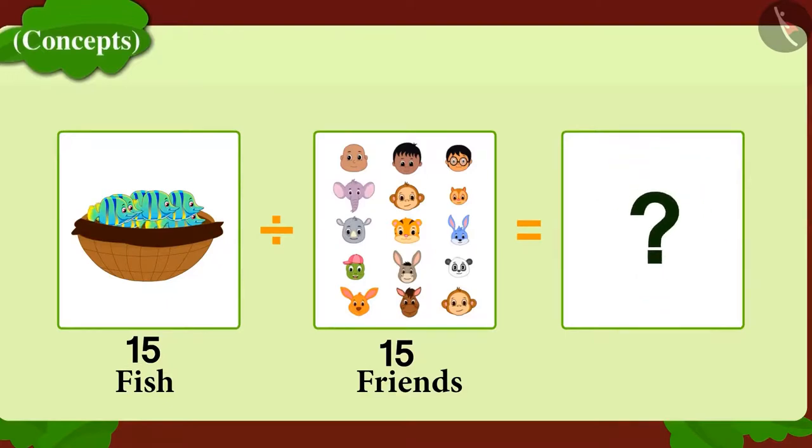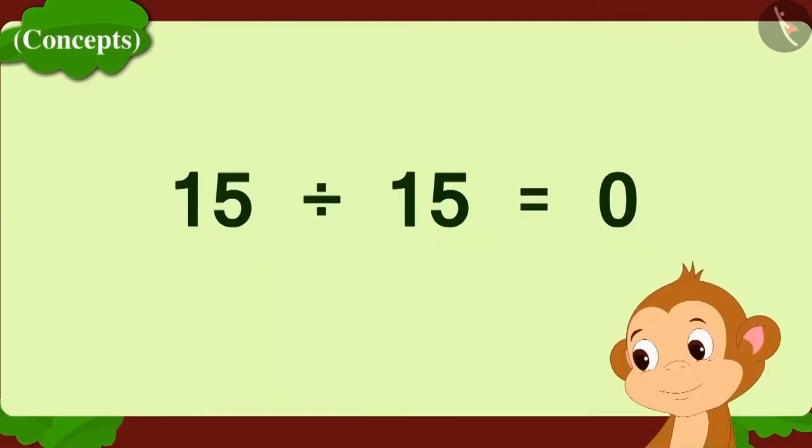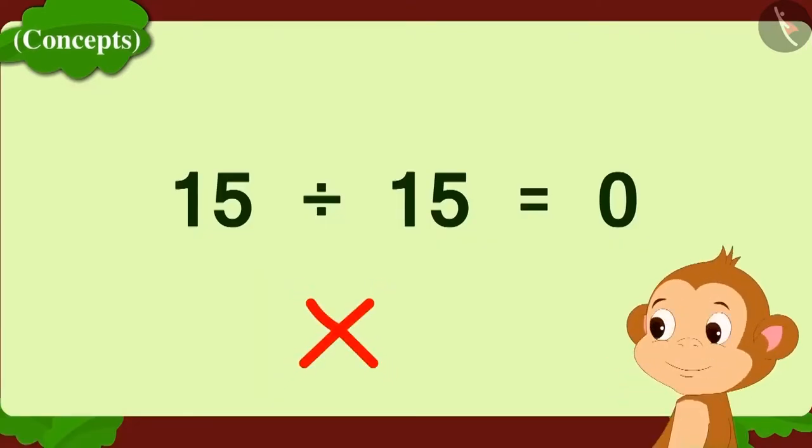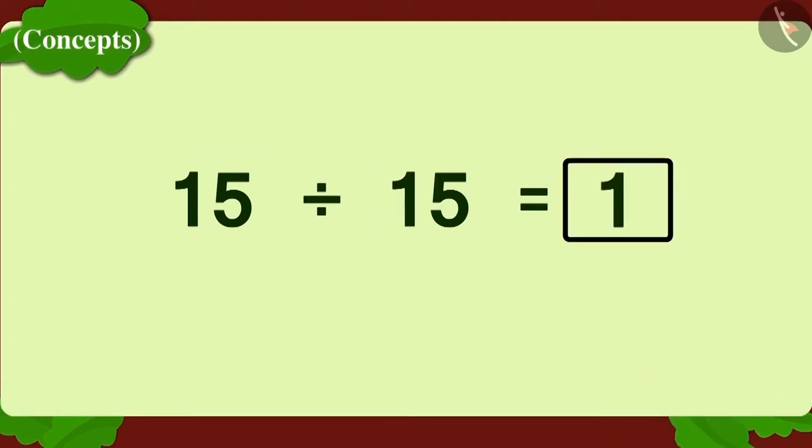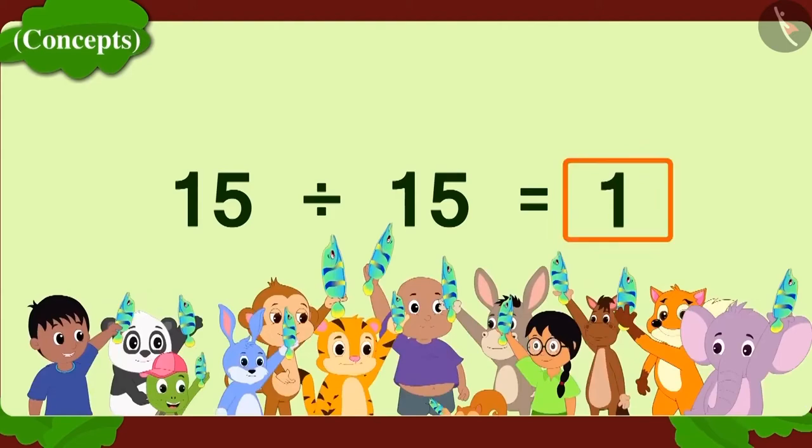Children, has Babban written this correctly? Oh, Babban has written it wrong. Whenever we divide a number by itself, the answer will always be one, as every person will get one object each.